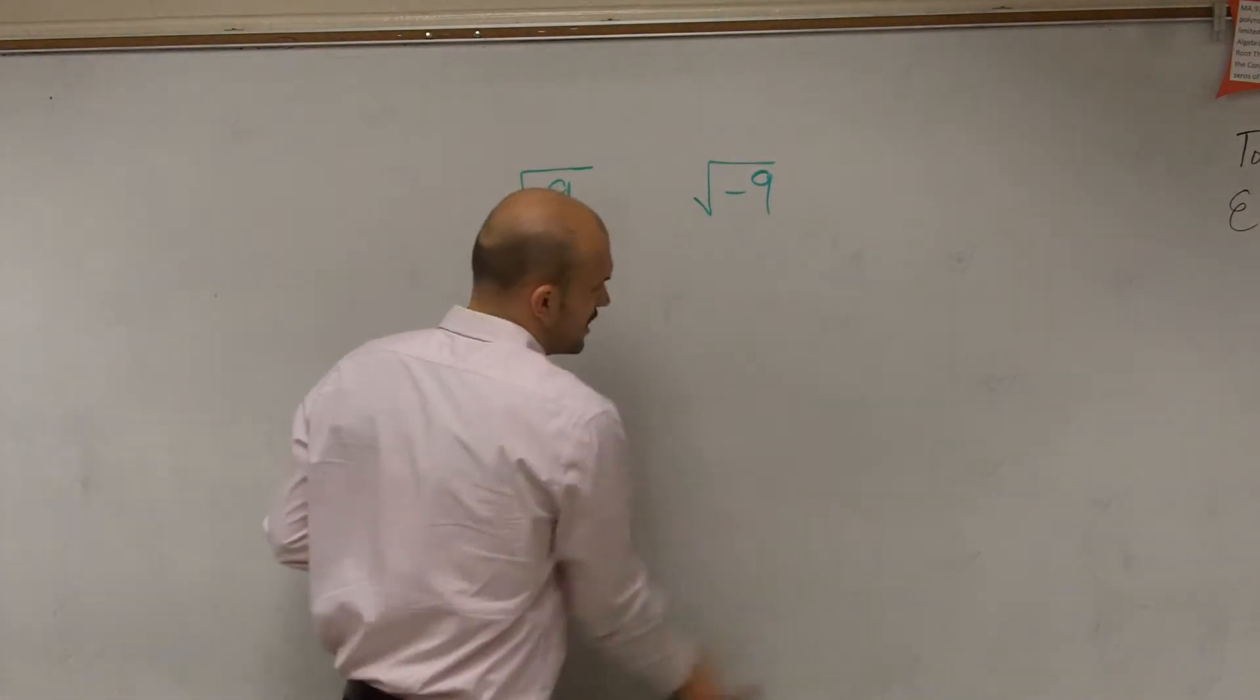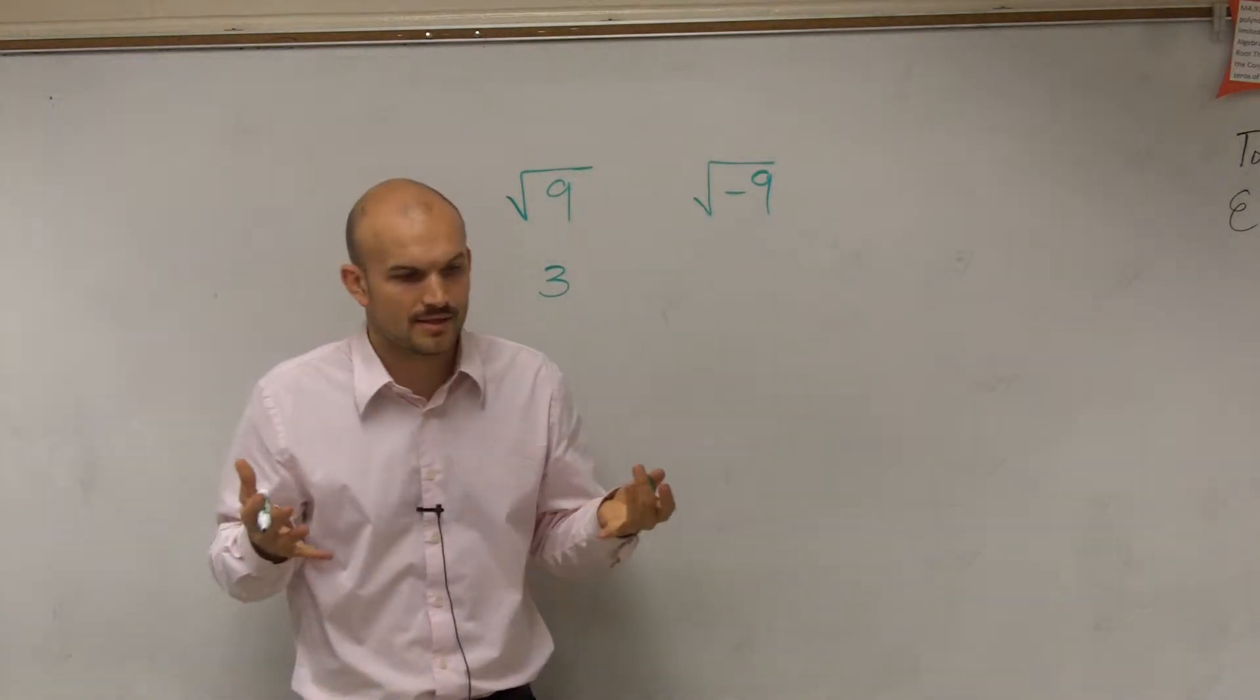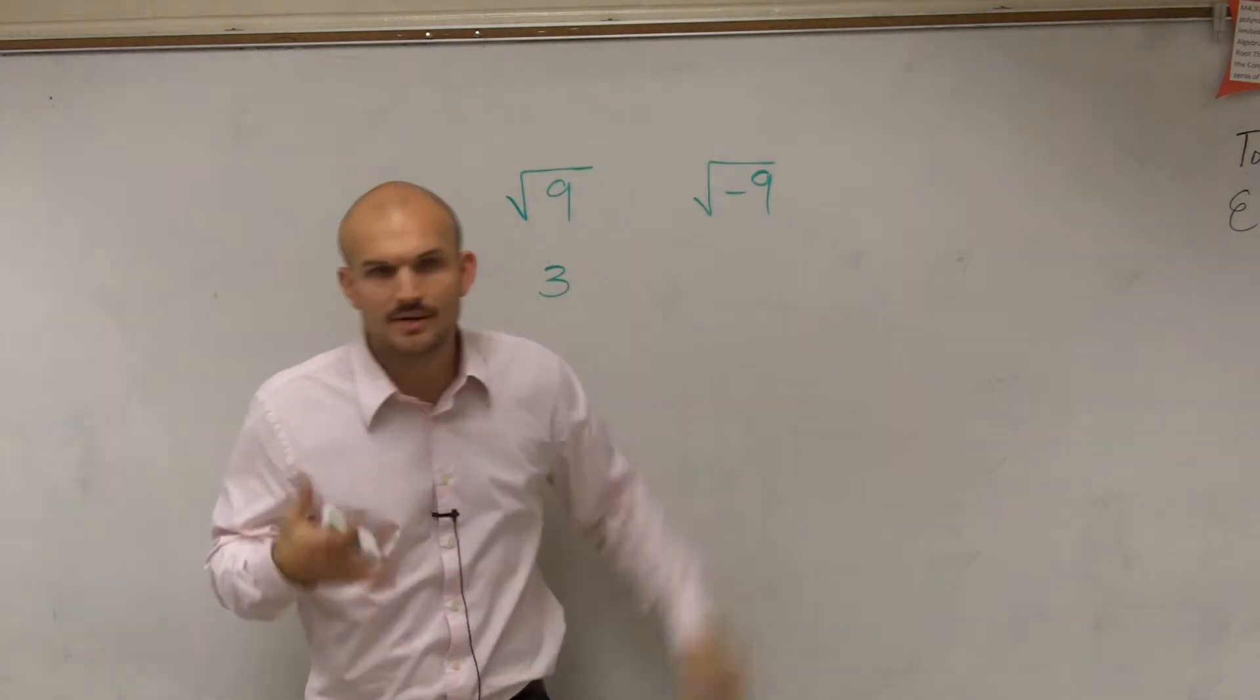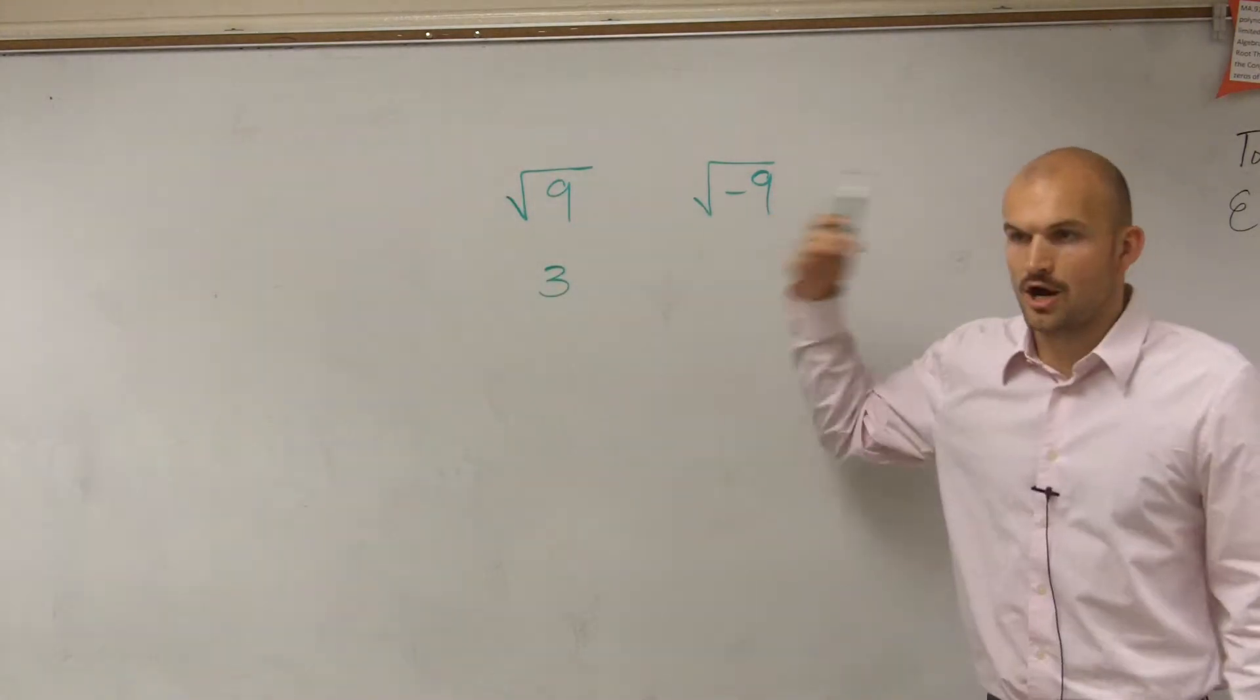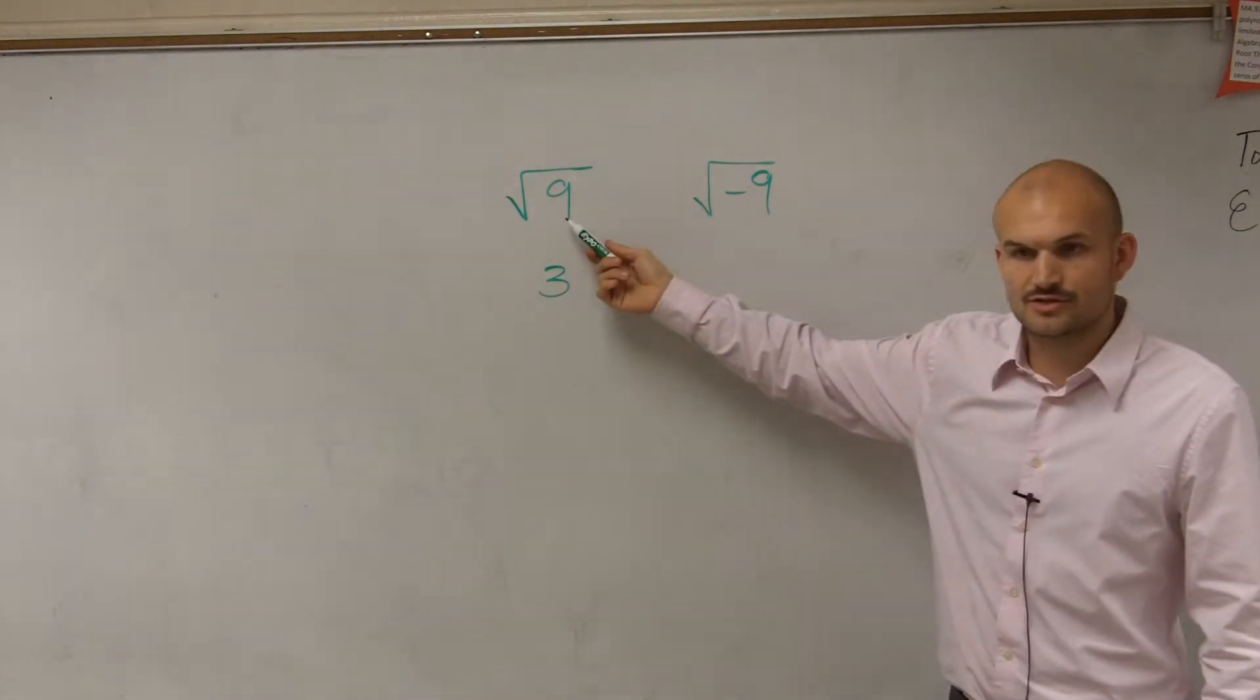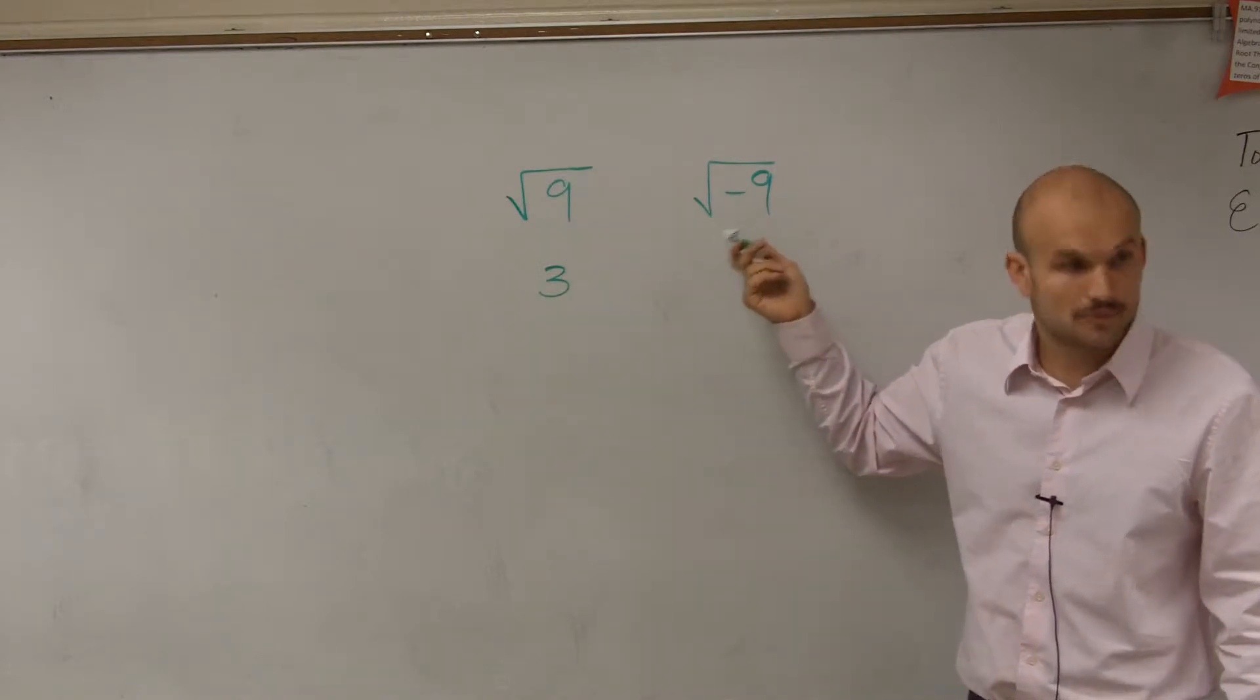So how can our knowledge of imaginary numbers help us solve this? Because here's why we use imaginary numbers. So far in our knowledge, we can take the square root of 9, but we cannot take the square root of a negative number in the real number system.